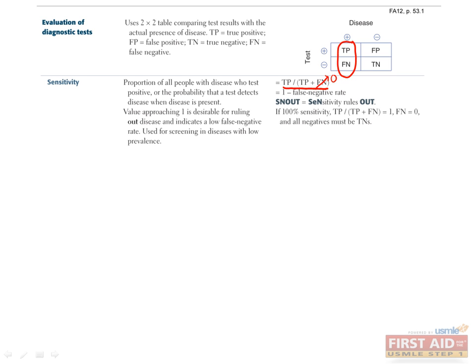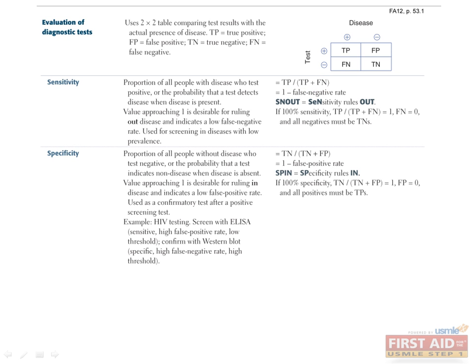A diagnostic test with high sensitivity is useful for screening diseases with low prevalence. For example, an ELISA is a test with high sensitivity, thus it is a good rule-out test for a disease like HIV.